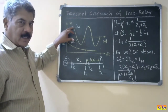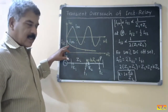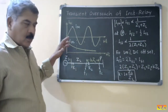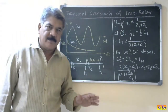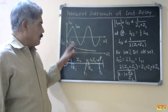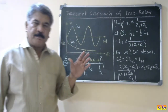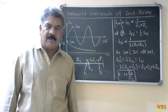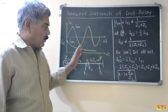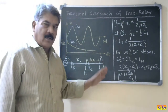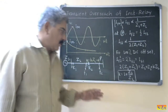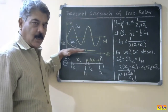In the worst case, the peak value of the DC offset can go up to IM, the peak value of the sinusoidal component. If we consider the worst condition, these two will be superimposed, so the maximum value of the fault current will be equal to 2 times IM. For derivation, we always consider the worst condition. That is about the DC offset of the fault current.